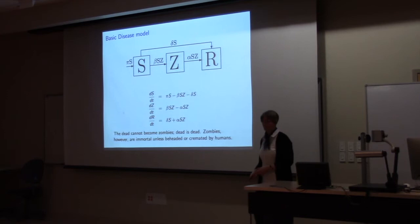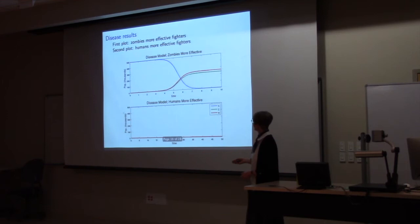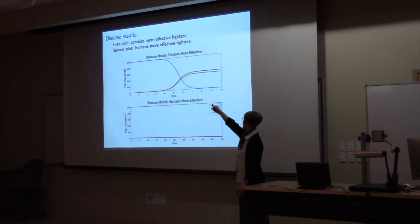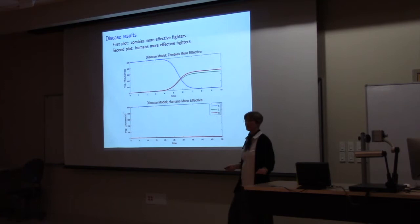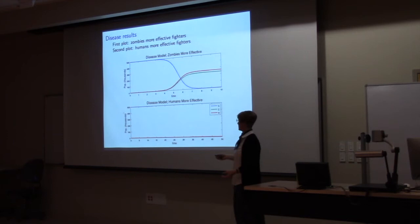So what happens when I try this model? So in the first plot, the zombies are the more effective fighters. And I'm sorry, but that's still a sad model. Because you can see that the humans are going away with time. But in the second model, I made humans better fighters than the zombies. And this is good news. Because as soon as a zombie shows up, we cut off its head. And then it's gone. And it's not a problem anymore. So if we're better fighters than them, we're in good shape.